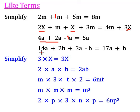In this one we have 14a plus 2b plus 3a minus b or 1b. So we can add together the like terms: 14a plus 3a which is 17a, and 2b minus 1b which is b. So that's 17a plus b.